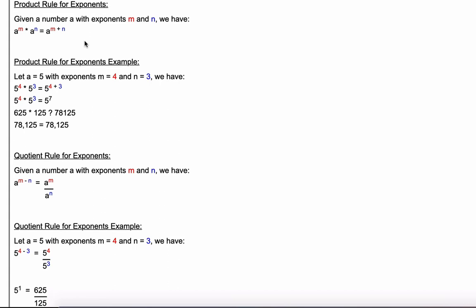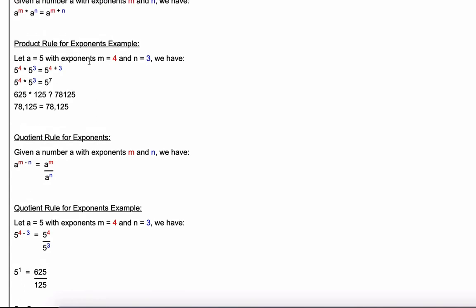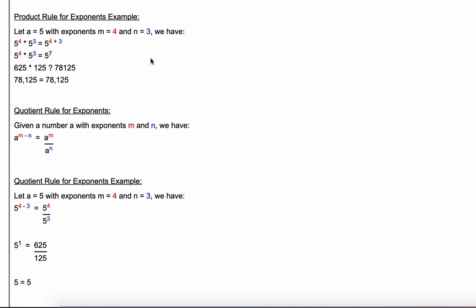Let's simplify with actual numbers. Let a equal five, m equal four, and n equal three. Using the product rule: five to the fourth times five to the third equals five to the four plus three, which simplifies to five to the seventh. To verify: five to the fourth is 625, five to the third is 125, and five to the seventh is 78,125. Indeed, 625 times 125 equals 78,125.